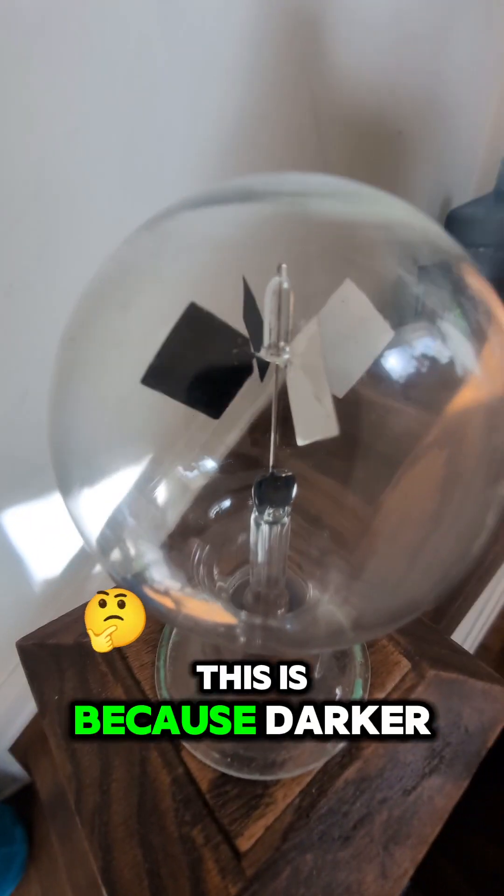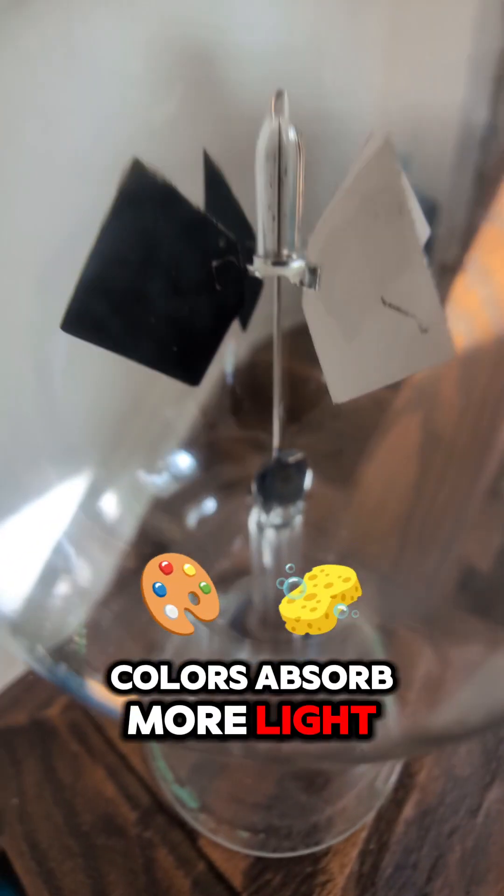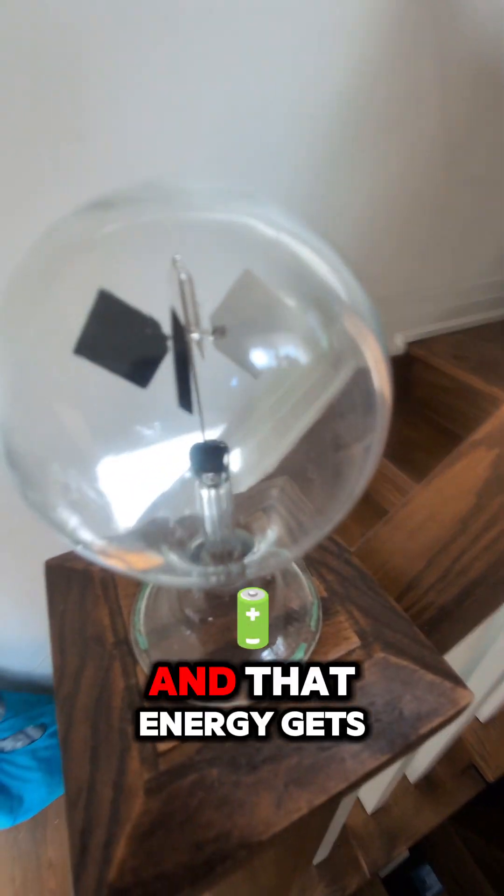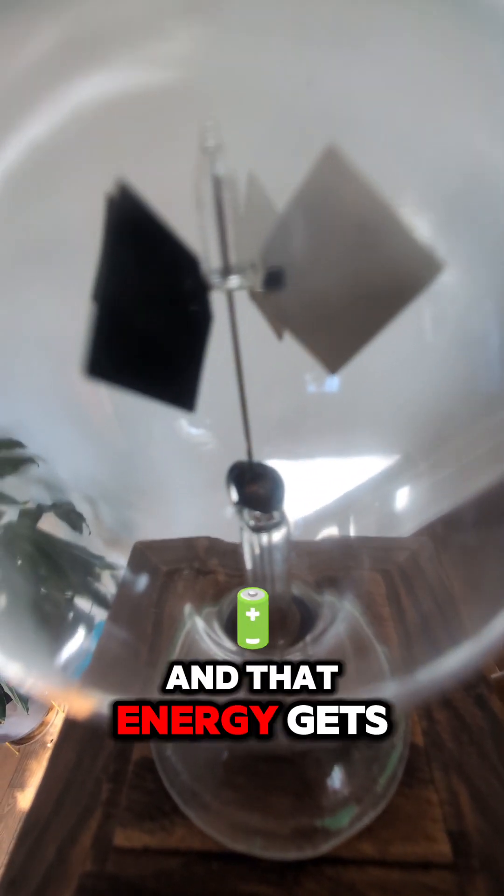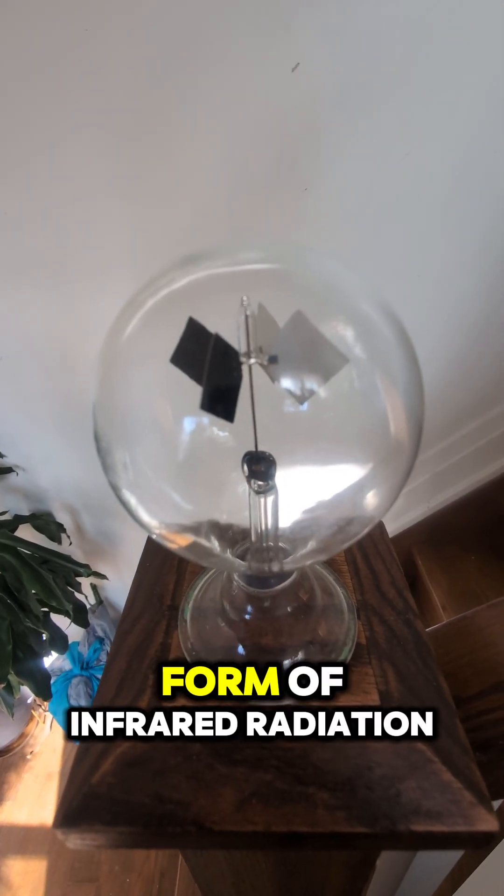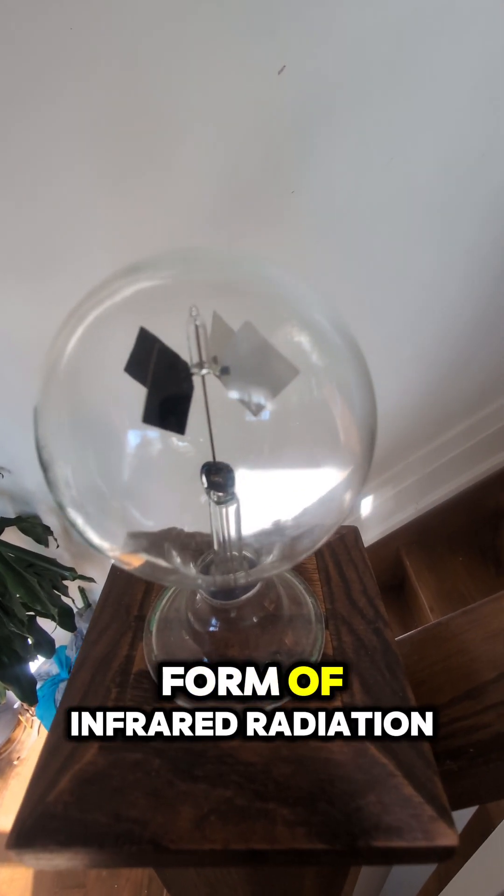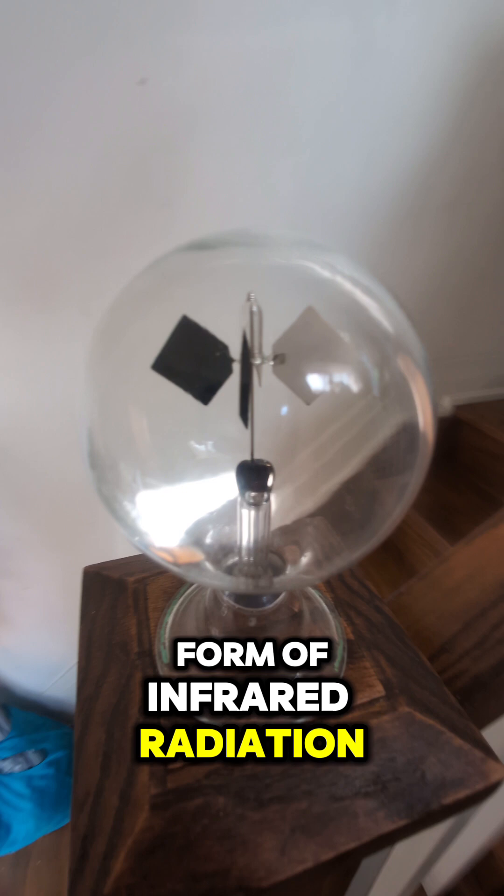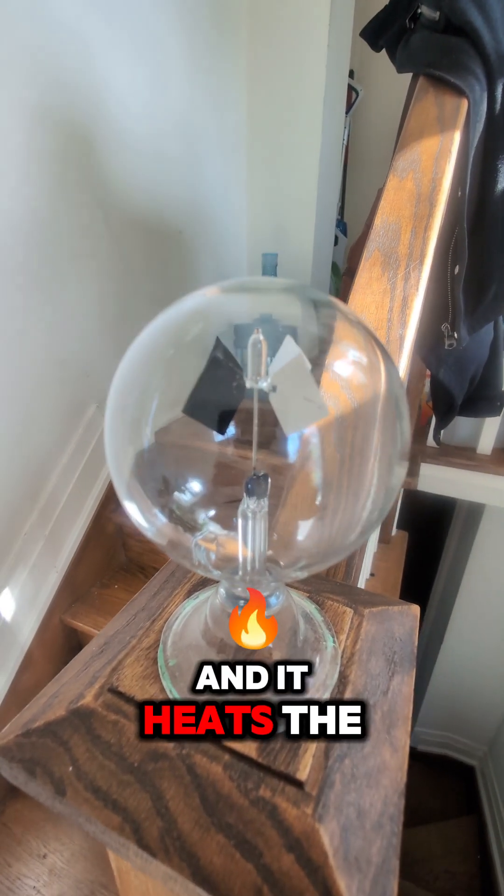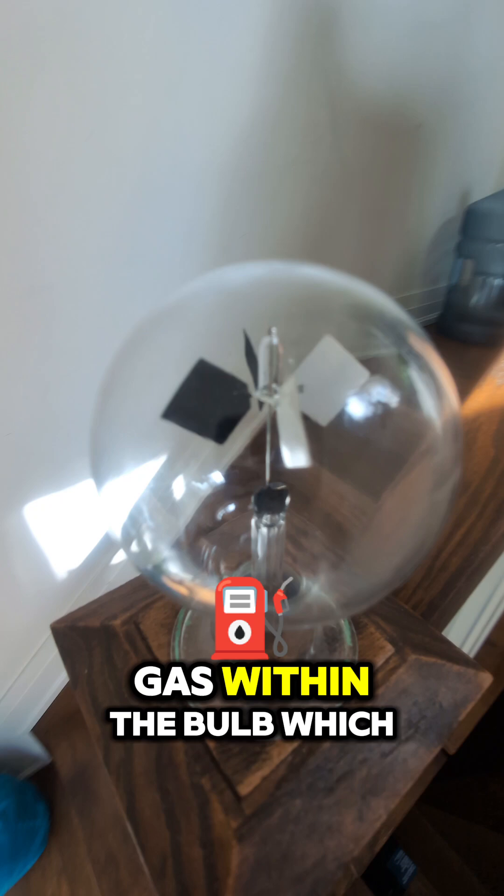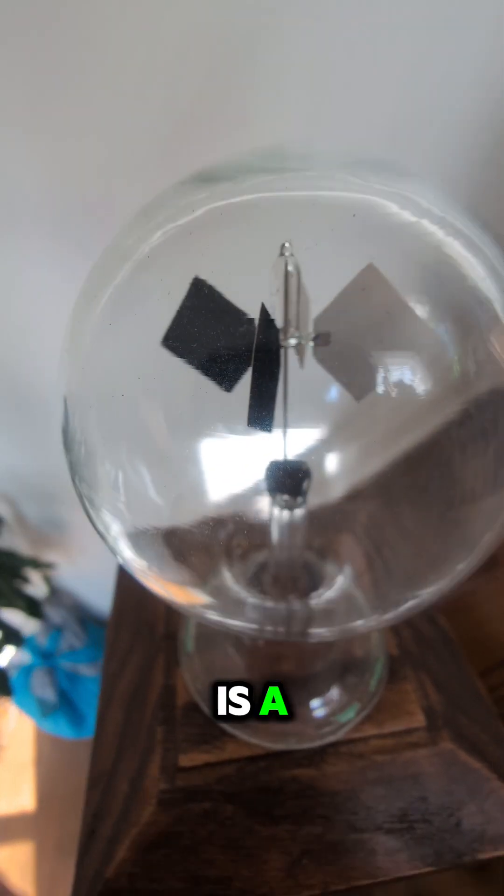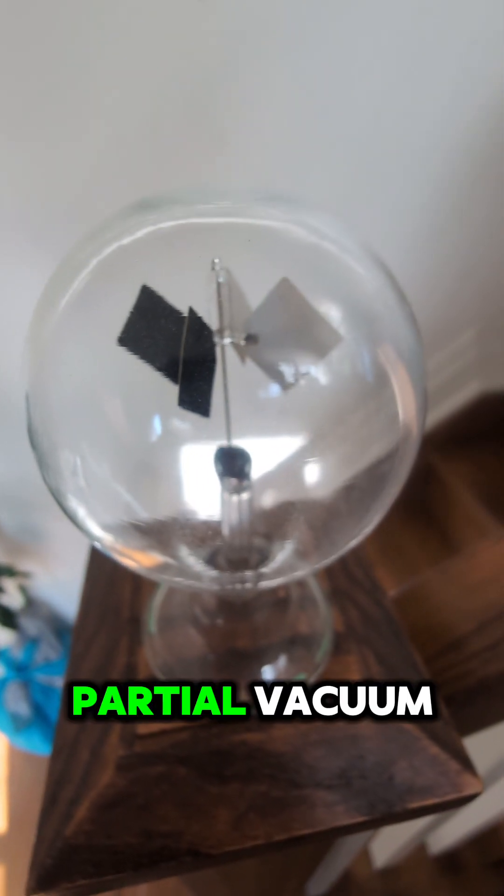This is because darker colors absorb more light along the electromagnetic spectrum, and that energy gets re-emitted in the form of infrared radiation, or heat, and it heats the gas within the bulb, which is a partial vacuum.